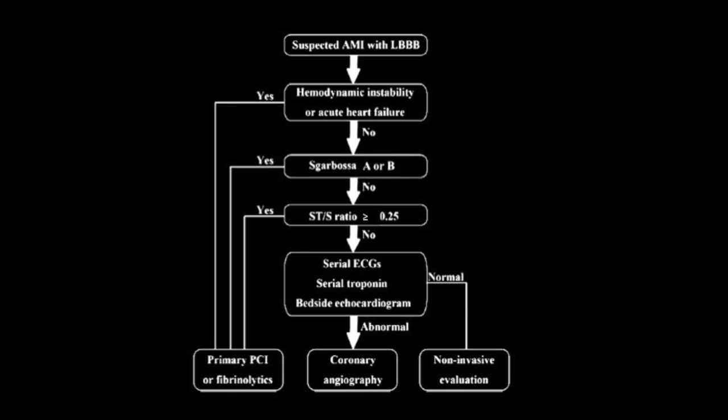Bringing it all together, here's a quick clinical diagram to guide your treatment. First off, any hemodynamic instability or acute heart failure — these people are treated as a STEMI. Secondly, we look at Sgarbossa A or B. If that's negative, we go to category C of the modified Sgarbossa. If all those are negative, we follow these people with serial EKGs and biomarkers.